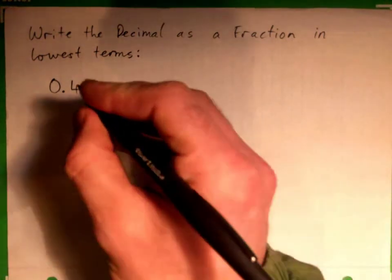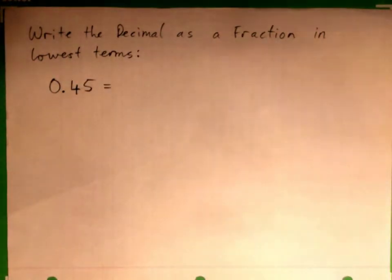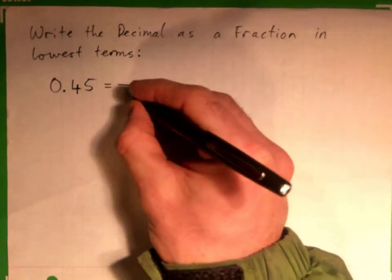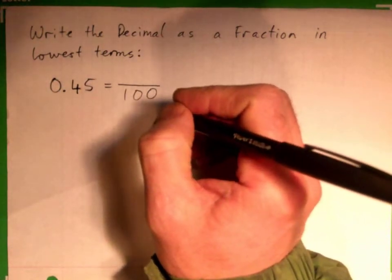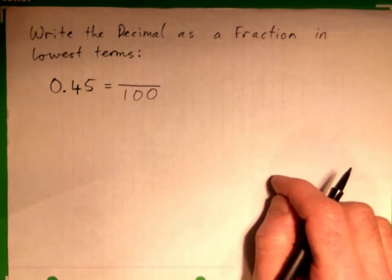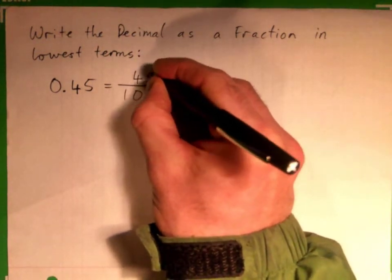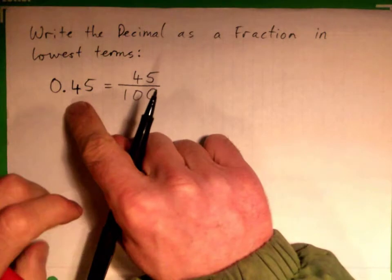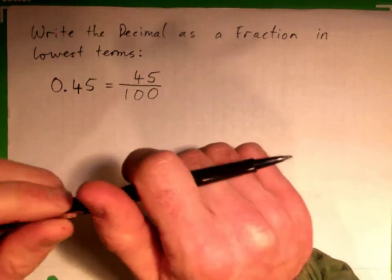So 0.45 is kind of like having 45 cents. If you think about money, right? And every cent is a hundredth. So how many hundredths is 45 cents, or 0.45? Yeah, it's just 45 hundredths. So 0.45 can be written 45 over 100. 45 cents, right? You okay with that part?